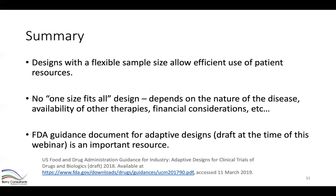In summary, designs with a flexible sample size allow us to make the most efficient use of patient resources. We can end trials early once we've answered the question and redirect savings to more interesting or promising questions. There's no one-size-fits-all design — the selected design and chosen thresholds depend on the nature of the disease, available therapies, and financial considerations. Be aware of an FDA guidance document recently released in draft form, which is an important resource if you're planning a trial with flexible sample sizes, particularly for regulatory interactions. Thank you.